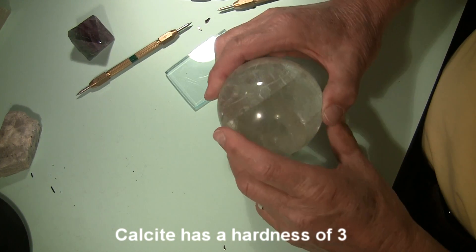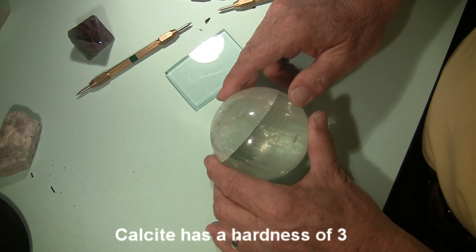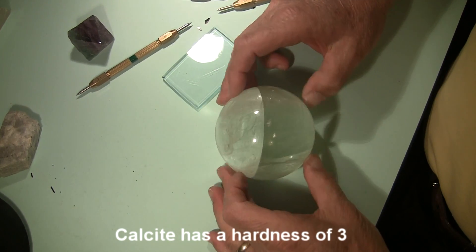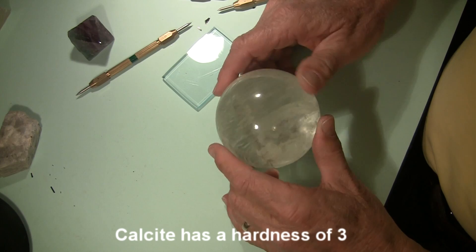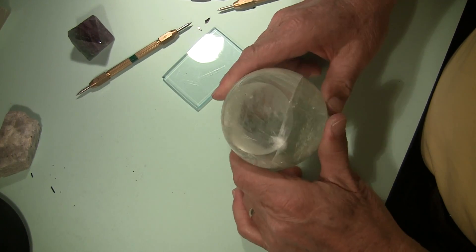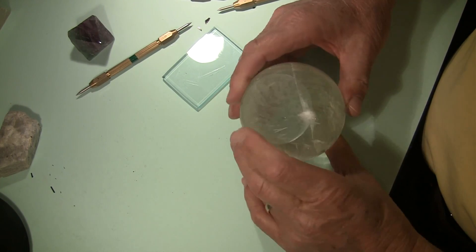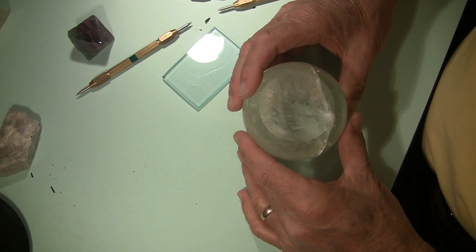Well, the mineral, based on the property of cleavage that you can see in the specimen, this is a piece of calcite that has been sculpted into this spherical shape. A nice cleavage face across the bottom there.